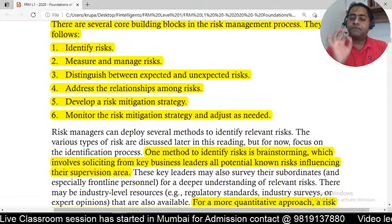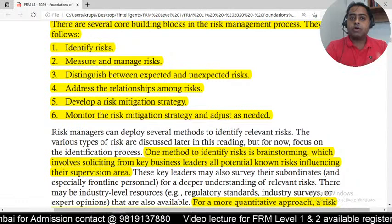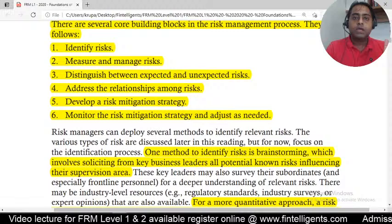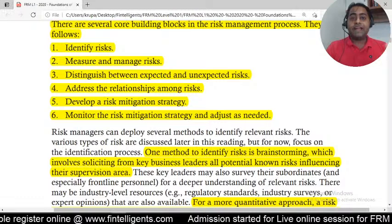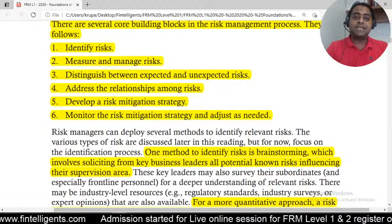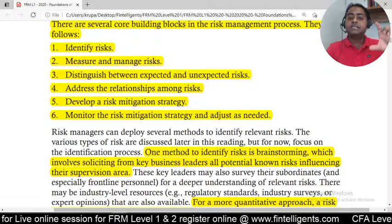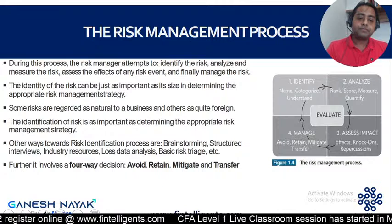The sixth step is to monitor the risk. In a bigger organization, major risks would already be identified. As a risk management team member, you would monitor whether a particular risk is increasing to a certain level or not. This monitoring process happens in risk committee meetings every month or quarter, where you present reports indicating which types of risk are increasing and whether they are within threshold limits.